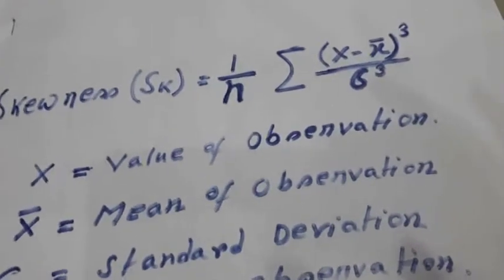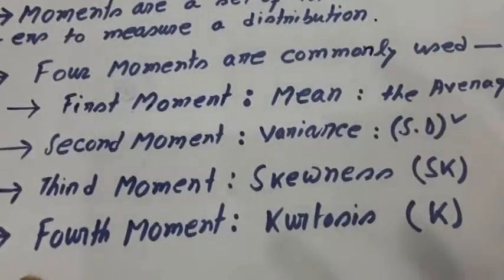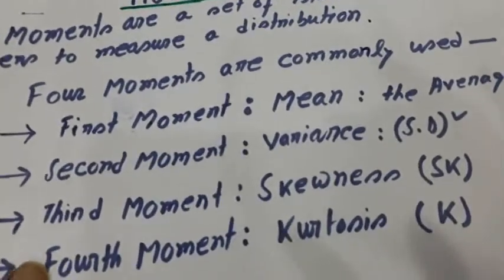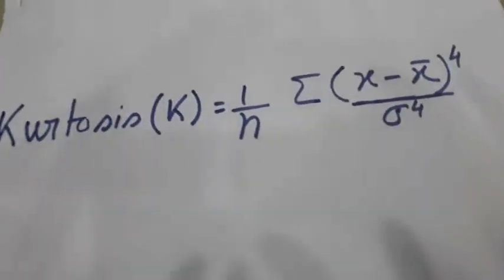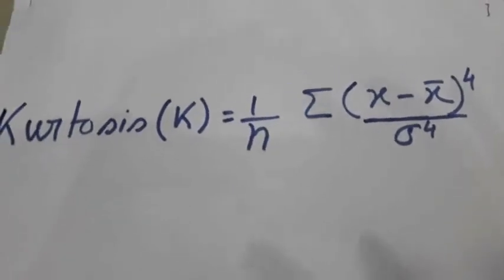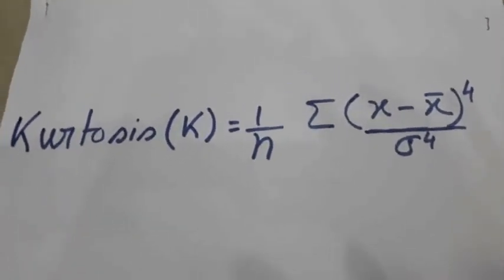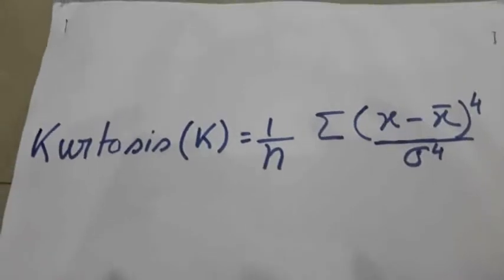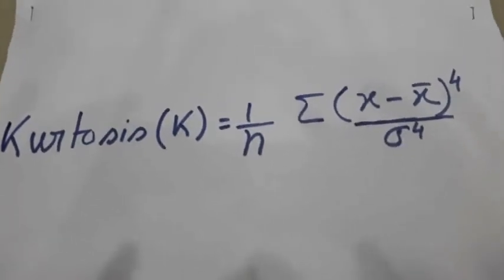And last, the fourth moment is called kurtosis, which is defined by the formula k equals to 1 by n summation